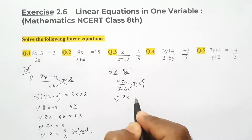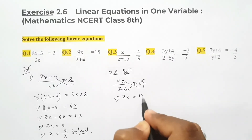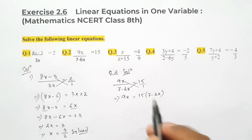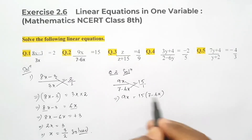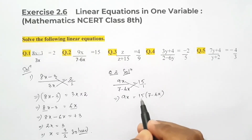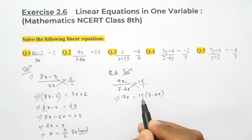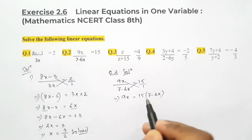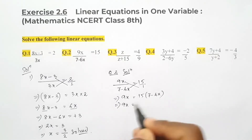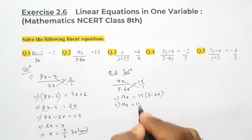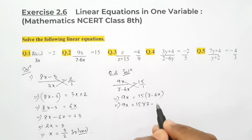So 9x into 1 is 9x only, and here 15 into (7 - 6x). Why do we give this bracket? Most students make a mistake here — they write 15 × 7 - 6x, which means multiplying only 15 with 7. Once you give the bracket, it means you need to multiply both 7 with 15 as well as -6x with 15. That is the reason we need to give the bracket. So 9x = 15×7 - 15×6x.